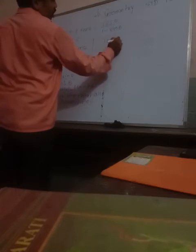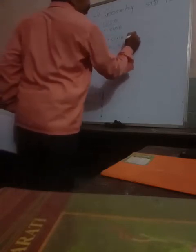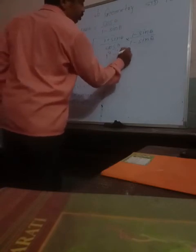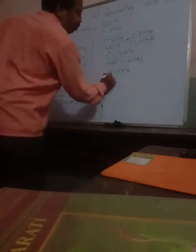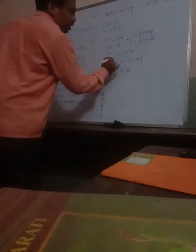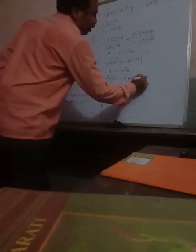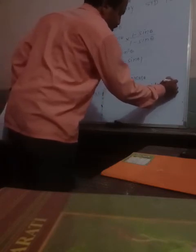We have 1 plus sin theta upon cos theta, and we multiply by 1 minus sin theta upon 1 minus sin theta. This gives (1 + sin θ)(1 - sin θ) which is A plus B times A minus B, so A squared minus B squared, giving 1 minus sin squared theta in the numerator over cos theta times (1 - sin θ). Now 1 minus sin squared theta equals cos squared theta.